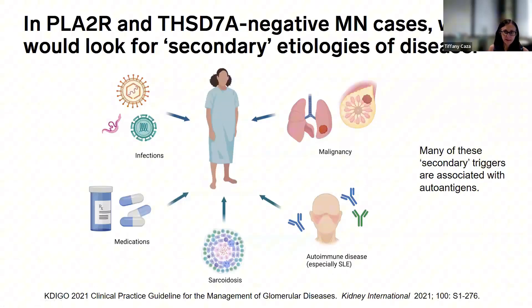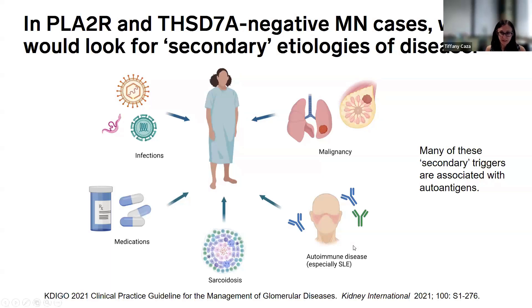With cases that are PLA2R and THSD7A negative, it is important to look for secondary etiologies. Per the KDIGO 2021 clinical practice guidelines for glomerular diseases, in patients who are PLA2R negative, you would want to do at least age-related cancer screening, look for autoimmune disease — particularly lupus, as membranous lupus nephritis is also fairly common — as well as evaluate for sarcoidosis, medications associated with membranous nephropathy, and infections.